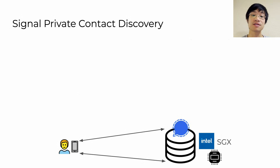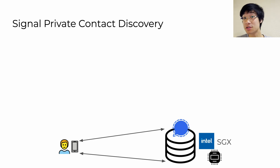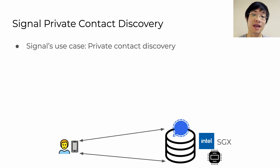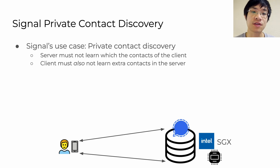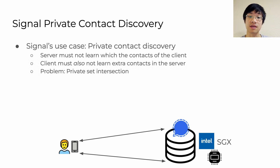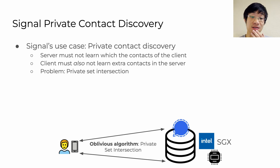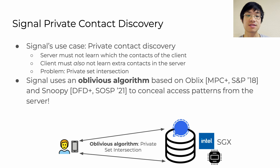Let's see a real-world use case of this. Signal is a popular messaging platform that aims to provide a high degree of privacy to its users. They have a use case known as private contact discovery, where when you join the app, they want to be able to show you who else in your contacts list uses Signal as well. The server shouldn't be able to learn what the client's contacts are, but the client also shouldn't be able to learn the extra contacts stored on the server. In other words, this is basically a private set intersection problem. Signal uses an oblivious algorithm based on two recent works, Oblix and Snoopy, to conceal access patterns from the server while efficiently performing this private set intersection, built within Intel SGX as their hardware enclave technology.